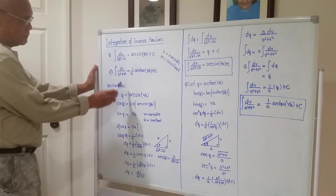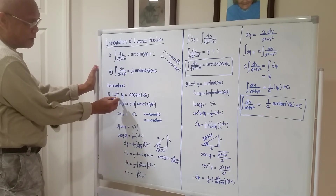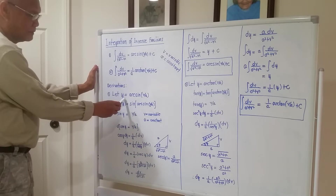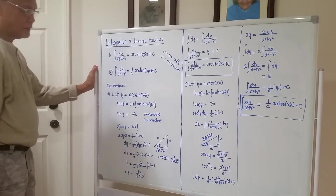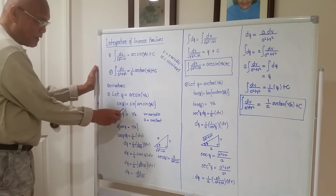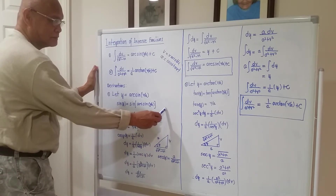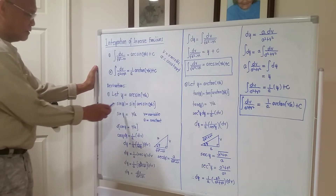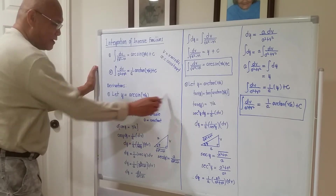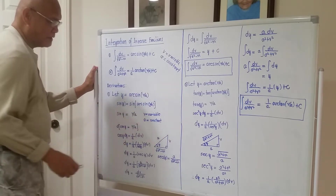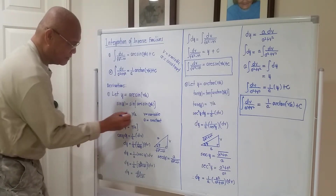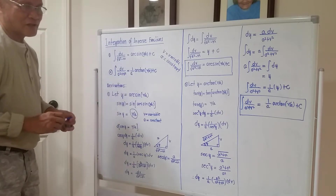Number one: to derive this formula, we let y equal to arc sine of b over a. Take the sine of both sides. The sine of y equals the sine of arc sine of b over a. Just like the integral sign going near the differential sign — they wipe out each other — the sine going near arc sine means they cancel each other, so what comes out is just simply b over a.